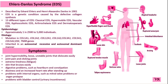EDS is generally caused by mutations in specific genes that are involved in the formation and function of connective tissue. The condition is most often inherited in an autosomal dominant manner, meaning that only one copy of the altered gene is needed to cause the disease. However, some types of EDS are inherited in an autosomal recessive pattern.